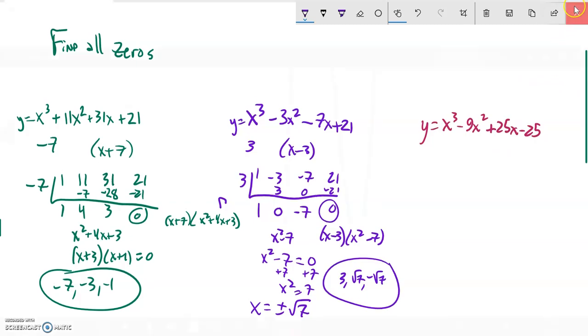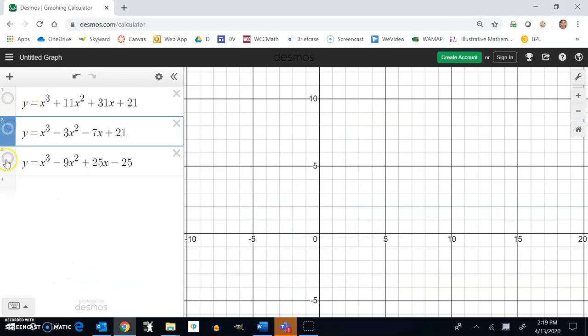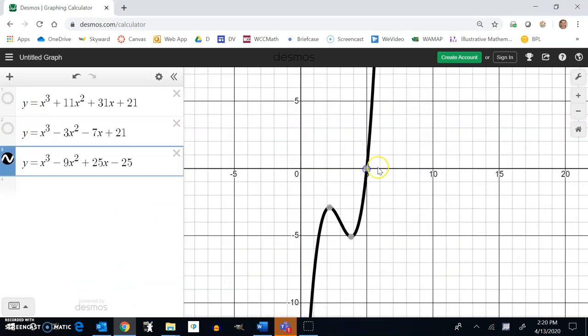Cool. Last one, let's do it. And again, surprise, surprise, here it is. Okay, and I have a zero here at five, and I don't have any, I have an intercept here at five and a zero, but I don't have any other intercepts.